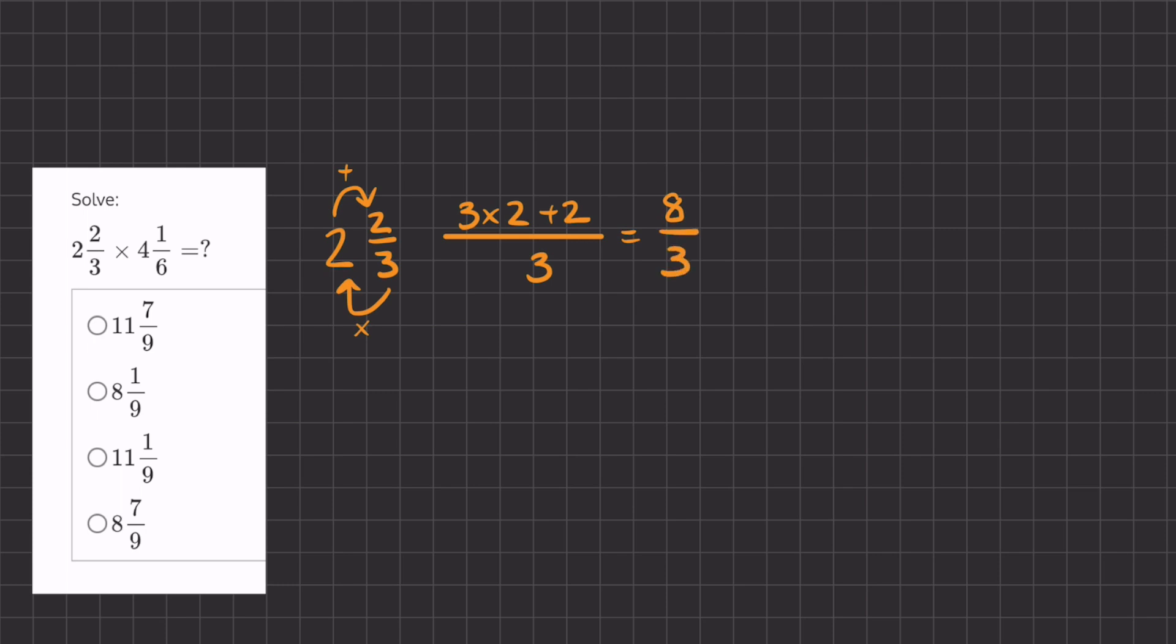We'll do the same thing for 4 and 1/6. We'll multiply 6 by the 4 and add that product to the numerator, or to the 1. So we have 6 times 4 plus 1, all over our original denominator of 6. 6 times 4 plus 1, that's 25 over 6.